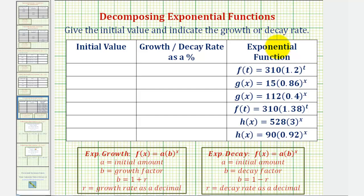In this problem, we're given six exponential functions. Three of them are exponential growth, and three of them are exponential decay. For each function, we want to find the initial value and also the growth or decay rate as a percentage.